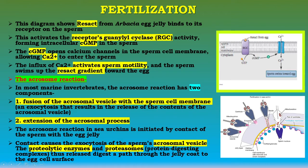In most marine invertebrates, the acrosome reaction has two components: first is fusion of the acrosomal vesicle with the sperm cell membrane — an exocytosis that results in the release of the acrosomal vesicle contents; second is extension of the acrosomal process. The acrosomal reaction in sea urchins is initiated by contact of the sperm with the egg jelly. Contact causes exocytosis of the sperm's acrosomal vesicle; proteolytic enzymes and proteosomes released then digest a path through the jelly coat to the egg cell surface.